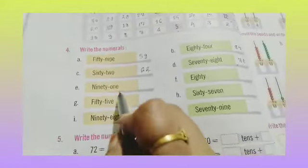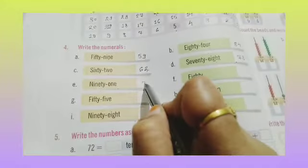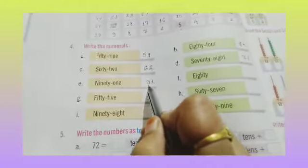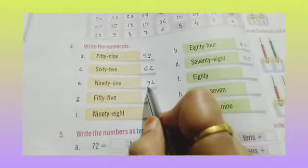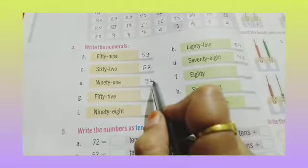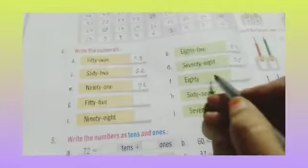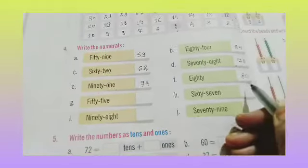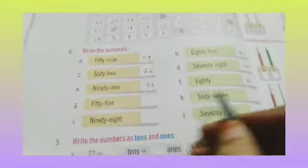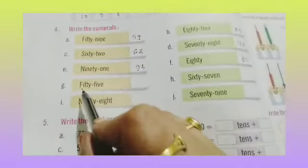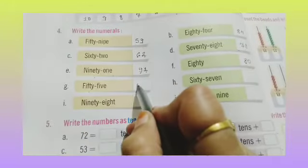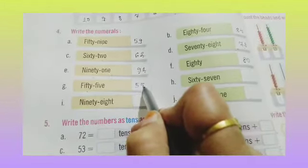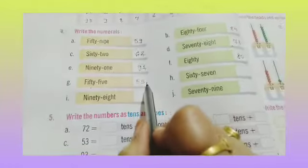91 — 9 at the tens place and 1 at the ones place. 80 — 8 at the tens place. 55 — 5 at the tens place and 5 at the ones place, so 55.